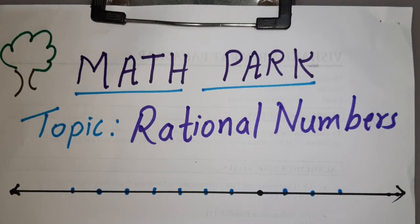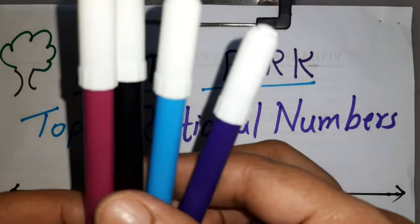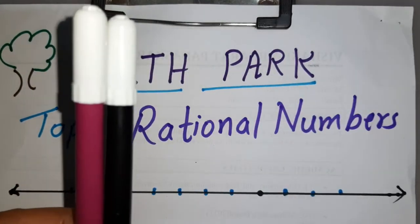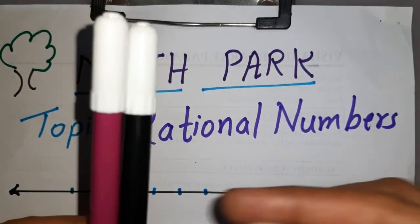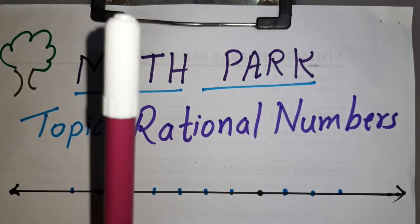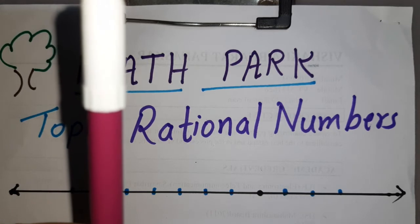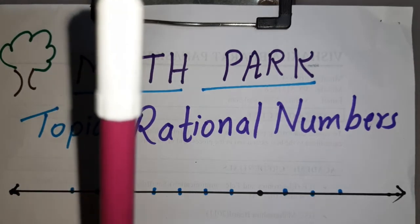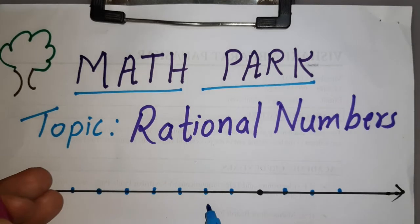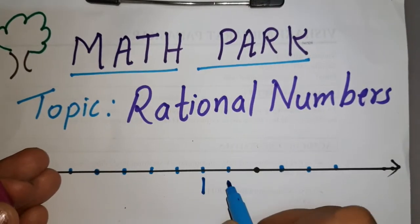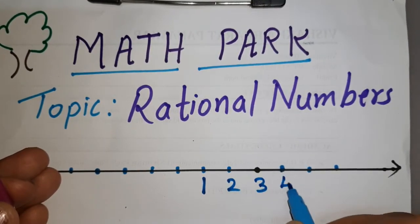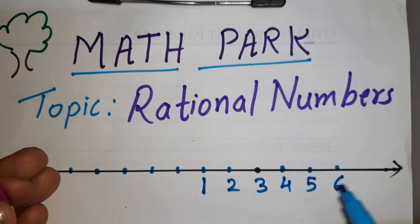Before learning rational numbers, let us recap what types of numbers we have learned. We have learned natural numbers. Here we can see there are four sketch pens — I take away two, two are left; I take away one, one is left. One, two, three, four — we can see these in nature, that is why they are called natural numbers.